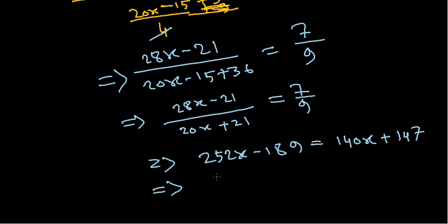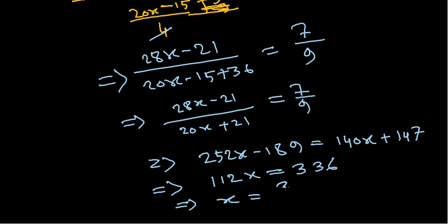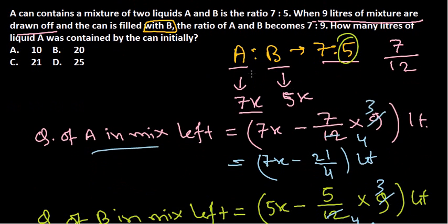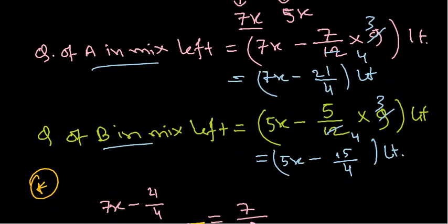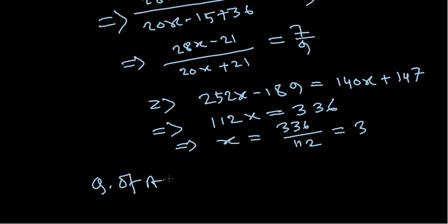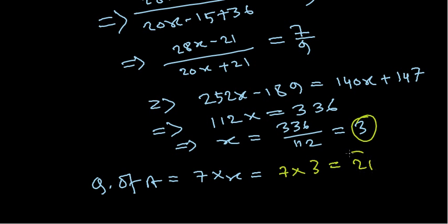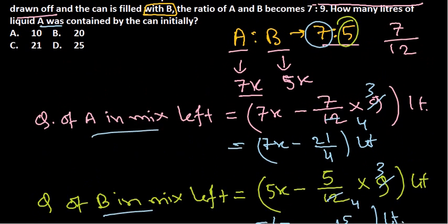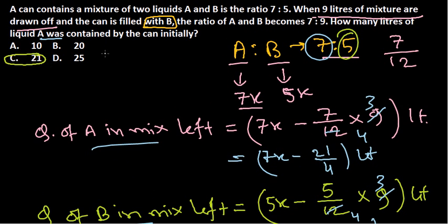Solving for x: x = 336 / 112 = 3. Now, x is our multiplying factor. The initial quantity of liquid A was 7x = 7 × 3 = 21 liters. So 21 liters is the answer for the initial amount of liquid A. Option C is the correct answer for this question.